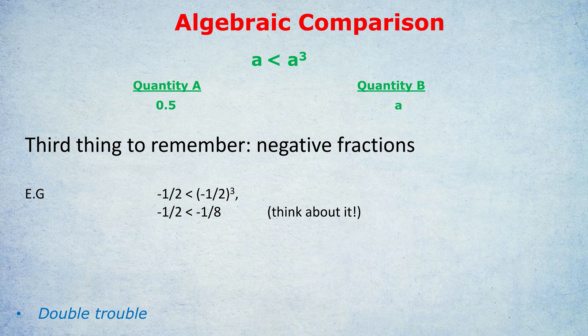For medium to easy level questions they'll generally only test negatives and maybe positive fractions. But for the highest level, they'll also get you thinking about negative fractions. The answer here is D — we can't tell, because A could be a positive integer like 2, in which case quantity B would be bigger, or A could be a negative fraction, in which case quantity A would be bigger.